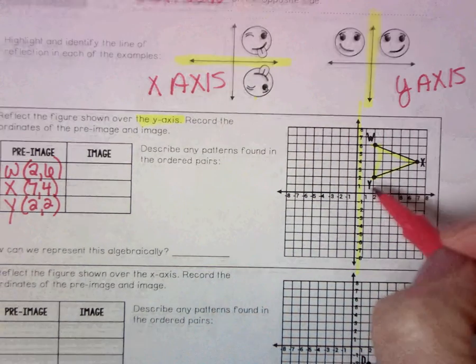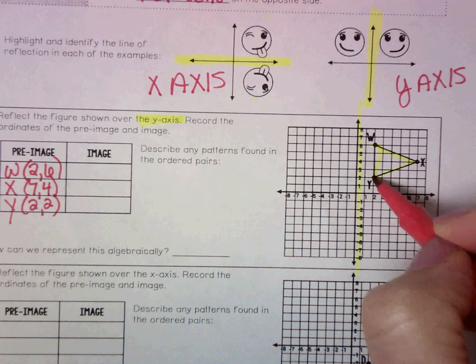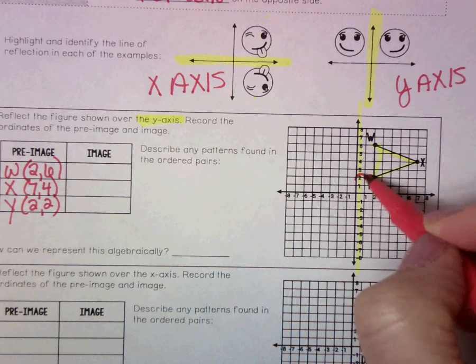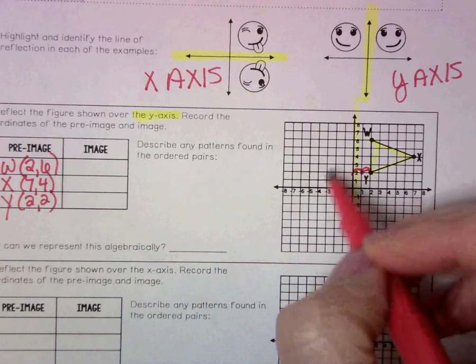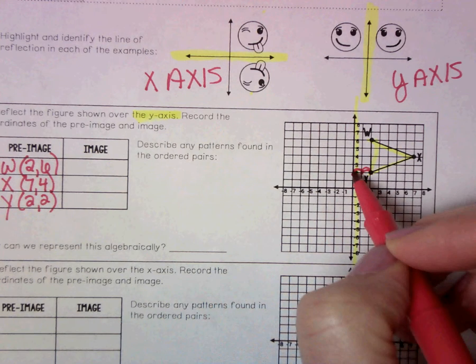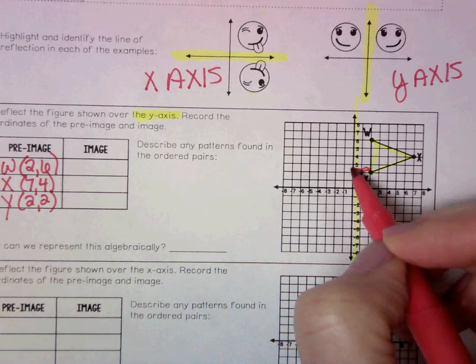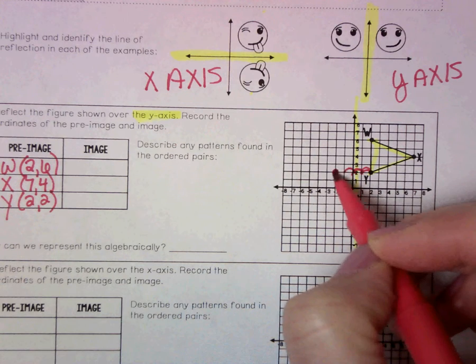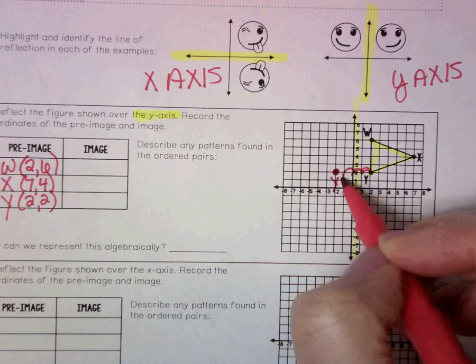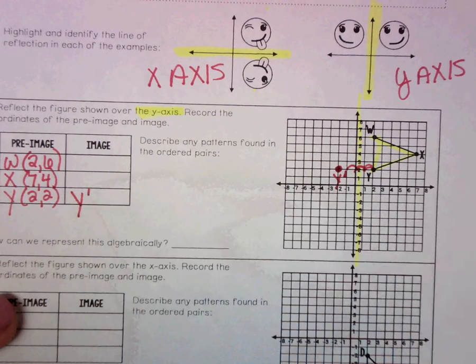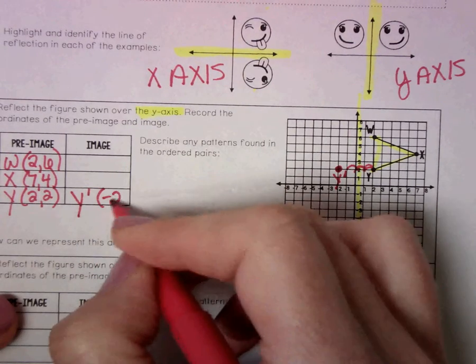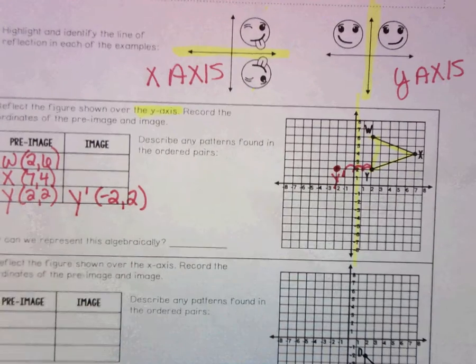What I want you to notice is that point y is 2 units away from the y-axis. So I'm going to go to the other side and I'm going to place y prime 1, 2, 2 units away. So my new y prime is (-2, 2).